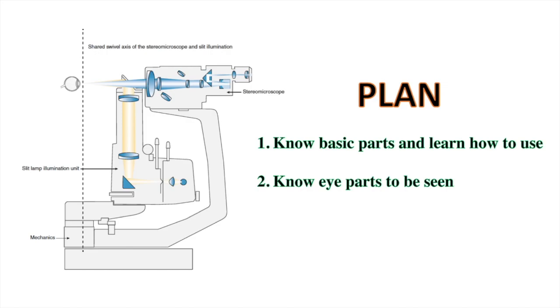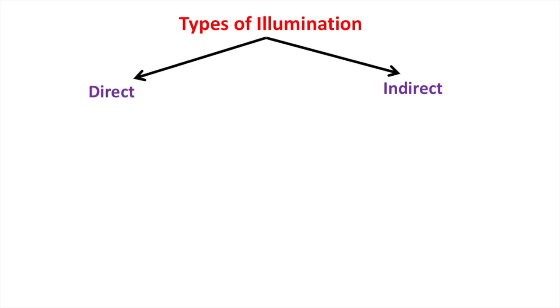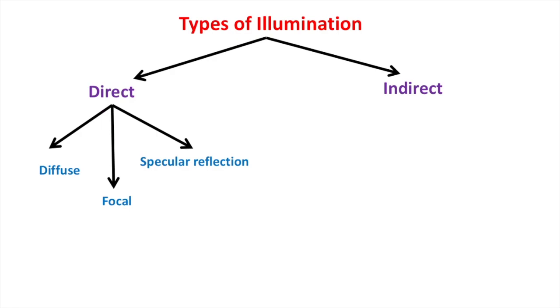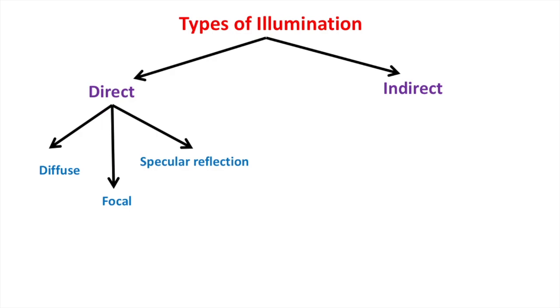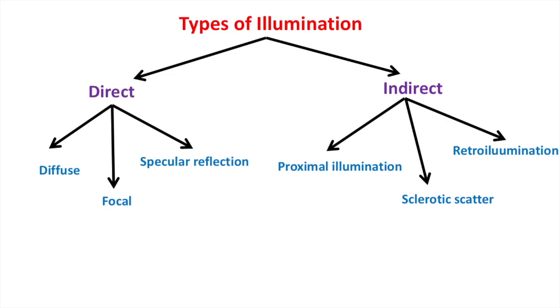We should know which parts of the eye are to be seen and by which technique or examination. There are various types of illumination techniques: direct and indirect. Direct illumination can be diffuse, focal, and specular reflection, whereas indirect can be proximal illumination, sclerotic scatter, or retro-illumination. Each of these will be dealt with in detail.